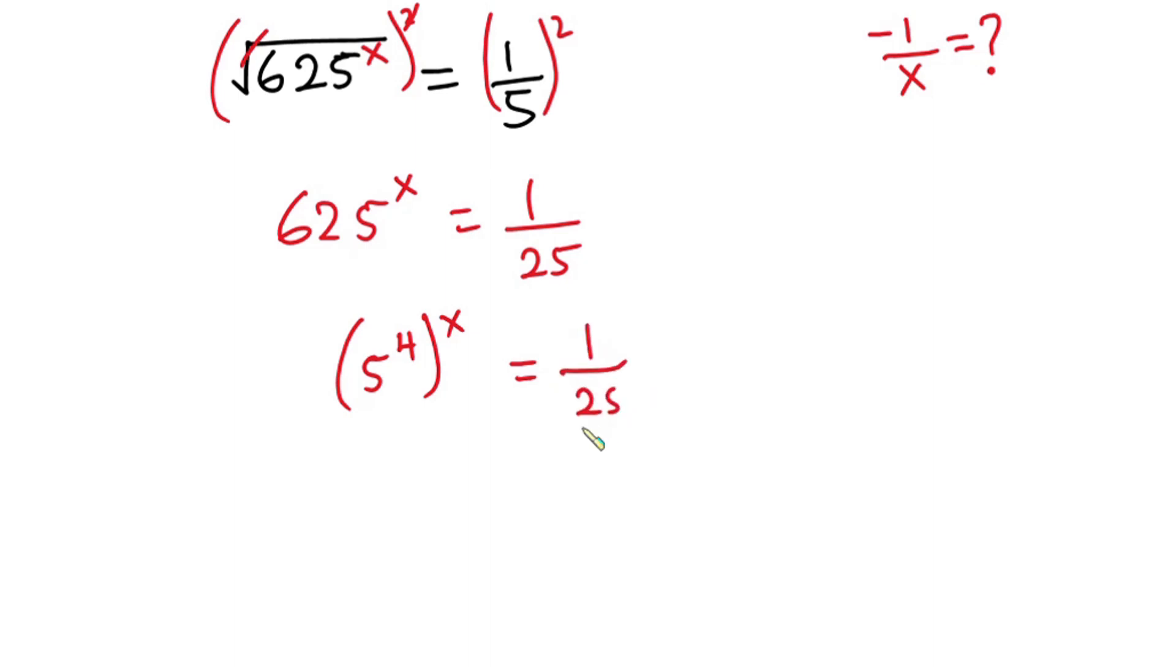So we have 5 to the power 4x is equal to... now this whole thing could also be written as 25 to the power negative 1. So we have 5 to the power 4x is equal to 25, which is also the same as 5 to the second power.